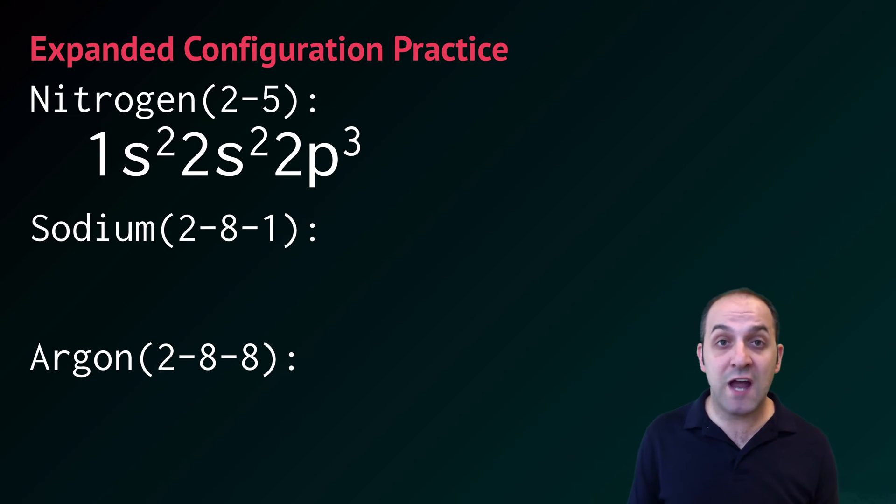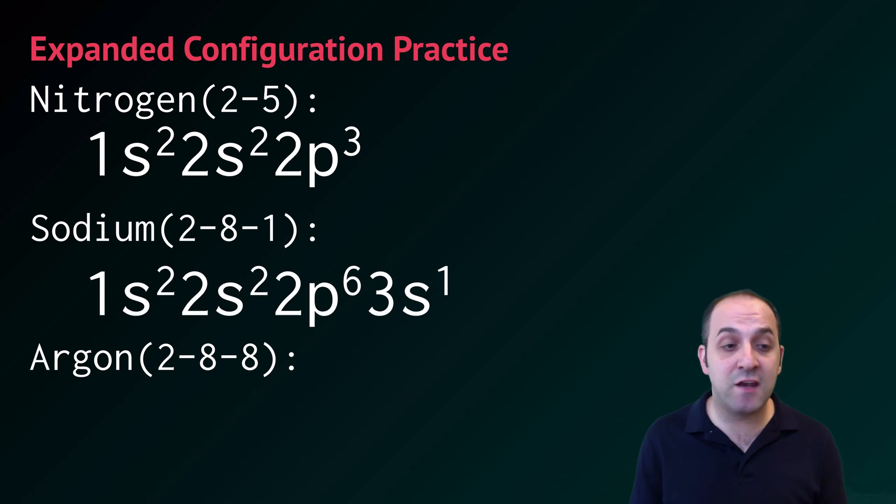Sodium's basic electron configuration is 2-8-1, and so its expanded configuration is 1s2, 2s2, 2p6, 3s1. Again, the first two electrons in that first principal energy level go into principal energy level 1's S sublevel, 1s2. We have eight total electrons in our second principal energy level. The first two are going to go into the 2s sublevel, and the next six are going to go into the 2p sublevel. The second principal energy level is now entirely filled, and so our remaining electron is going to go into the 3s sublevel, so it's going to wind up being 3s1.